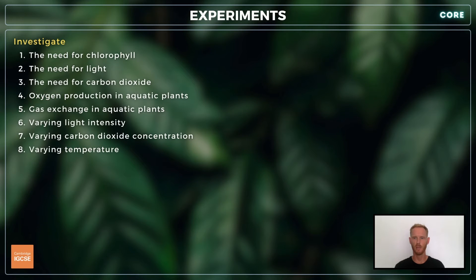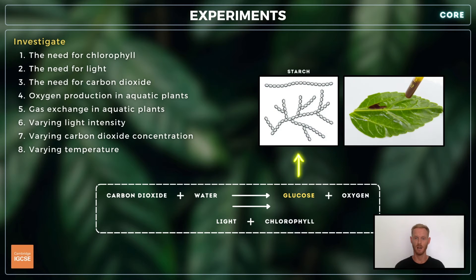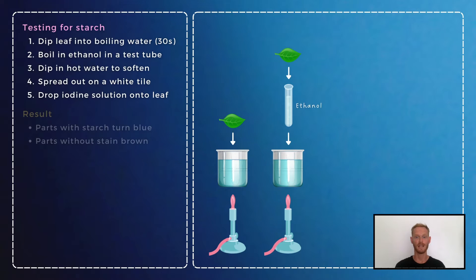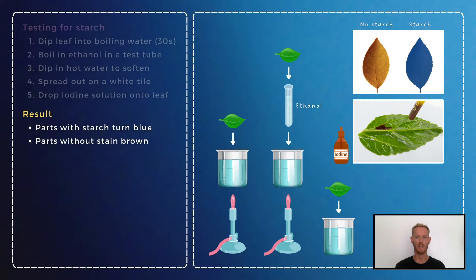You need to know how to conduct and interpret several controlled experiments on photosynthesis. Many of these experiments involve testing for starch, which is used as evidence of photosynthesis as it's made from glucose. To test for starch: boil some water in a beaker, turn off the flame, and using forceps, dip a leaf into the water for around 30 seconds to break down the cells and make the leaf more permeable. Submerge the leaf in ethanol in a test tube and boil to remove the chlorophyll, making any colour change easier to see. Next, dip the leaf in hot water to soften it, spread it out on a white tile, and apply a few drops of iodine solution. In the presence of starch, iodine changes colour from brown to blue-black.